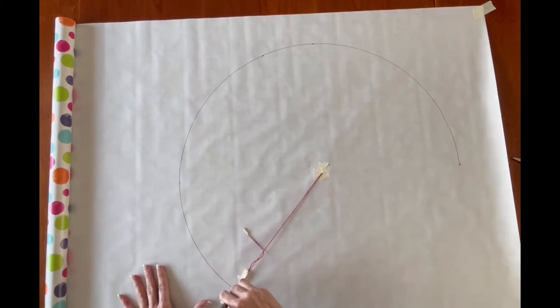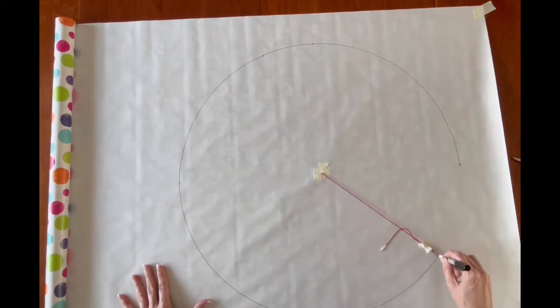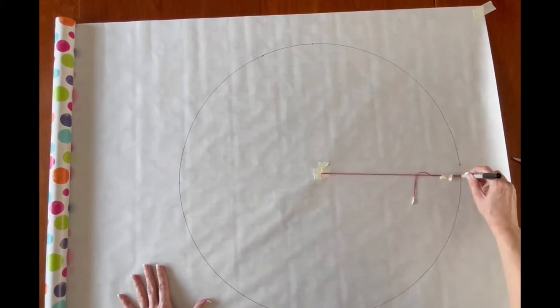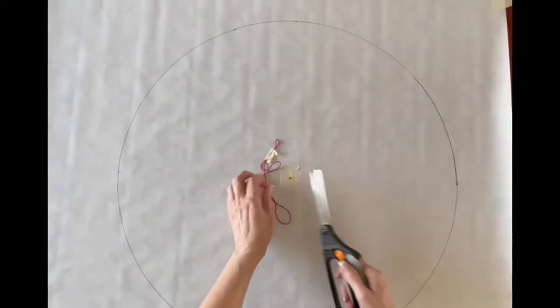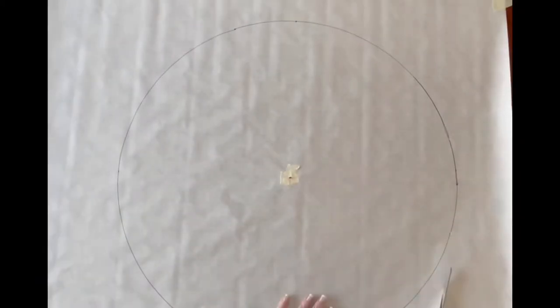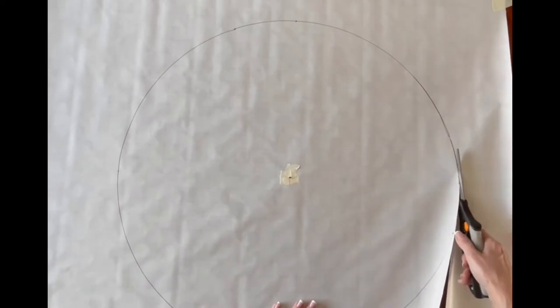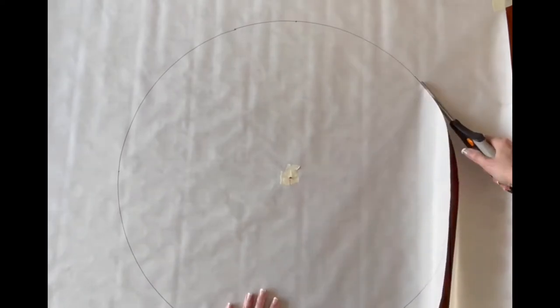Take your time. It's important that it's accurate. Remove the string and carefully cut out the circle. This is going to be the template for your clock. And it is two feet or twenty-four inches wide.